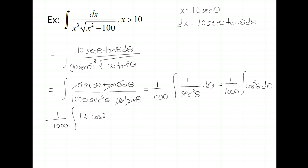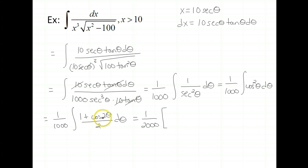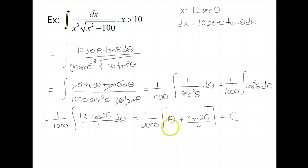Integrating gives (1/2000)(θ + sin 2θ / 2) plus C. But again, we're not done — our answer is in terms of theta and the original integral is in terms of x. The beginning variable should match the ending variable, so we need to rewrite the final answer in terms of x.